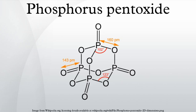The desiccating power of P4O10 is strong enough to convert many mineral acids to their anhydrides. Examples: HNO3 is converted to N2O5; H2SO4 is converted to SO3; HClO4 is converted to Cl2O7; CF3SO3H is converted to S2O5.